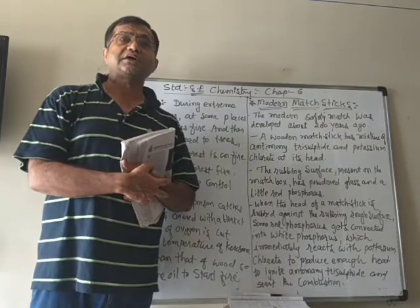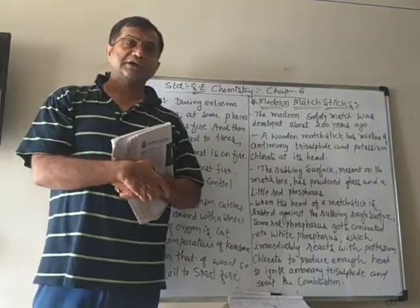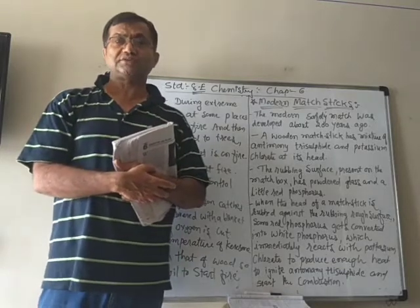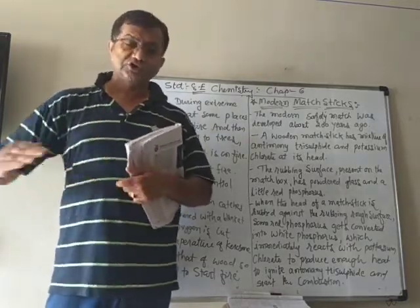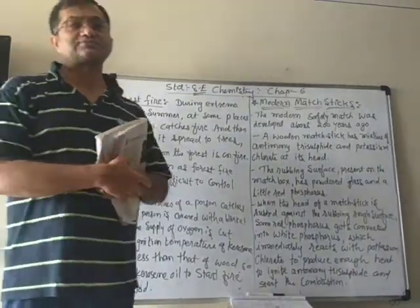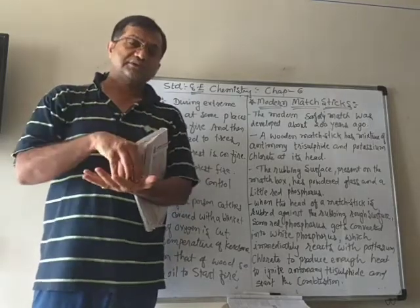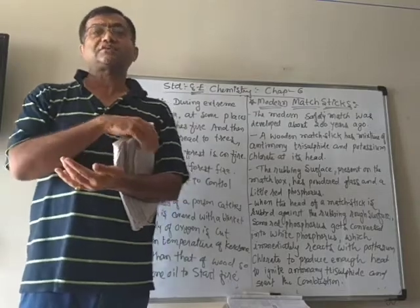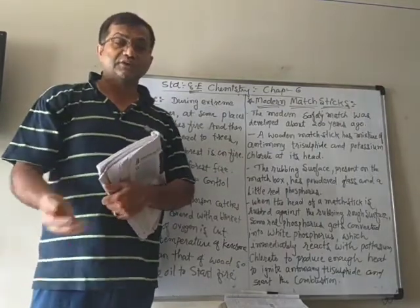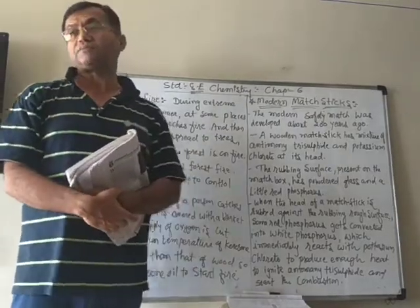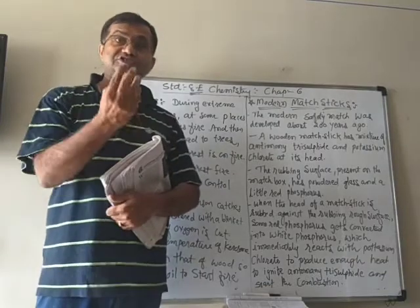We also learned this through an activity. We took a lighted candle and covered it with a chimney. In the first case, two wooden blocks were placed under the chimney so there was a gap between the table surface and the chimney, allowing oxygen to enter — and the candle kept burning. In the second case, the wooden blocks were removed so the chimney was in contact with the table. Oxygen supply was not adequate, so the flame was flickering and not steady.